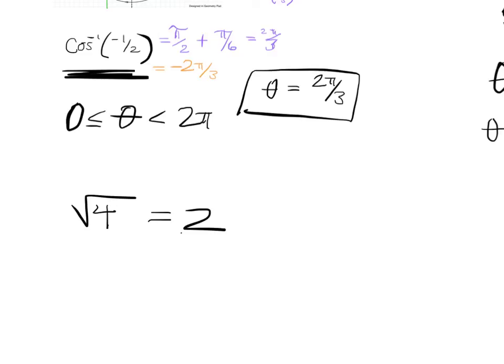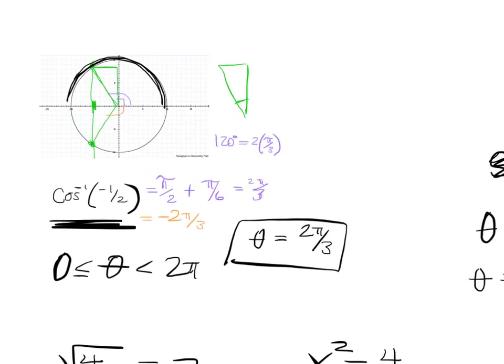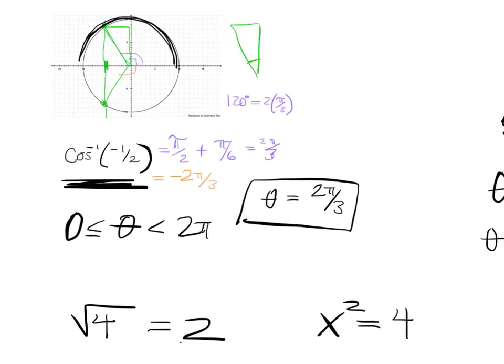The square root of 4 is 2. But the solutions to x squared equals 4 are plus and minus 2. You see what I mean? So that's the difference. Square root of x is like f inverse of x, where f of x equals x squared. We have to pick a value that we like. And we pick the positive one. Right? With inverse cosine and inverse sine, there's a little bit more to it.